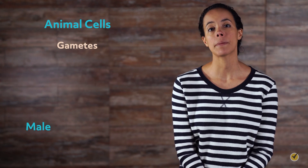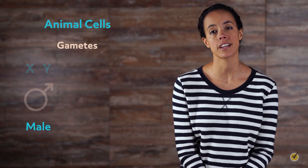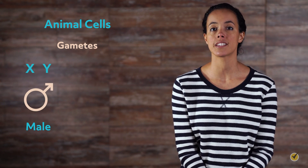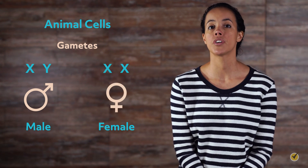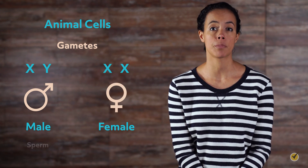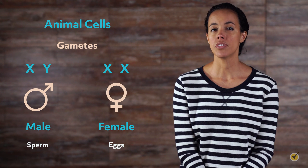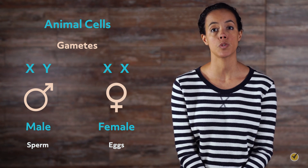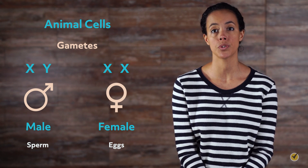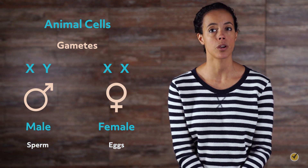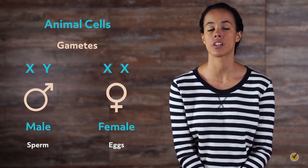Animal cells have gametes that exist as male, meaning they have an X and a Y chromosome, and gametes that exist as female, meaning they have two X chromosomes. We refer to these as sperm for males and eggs for females. Both of these cell types will undergo meiosis I and II to form four haploid cells that will become diploid cells, or zygotes, once fertilized.